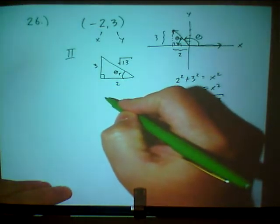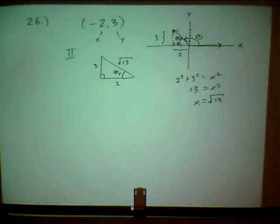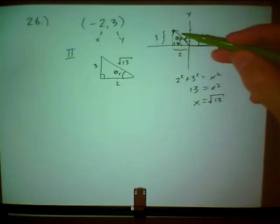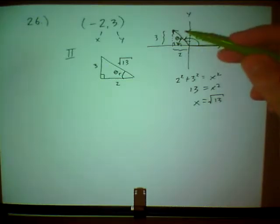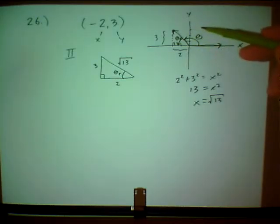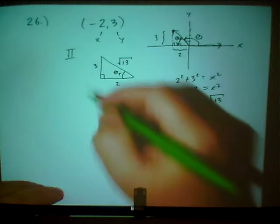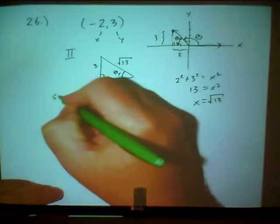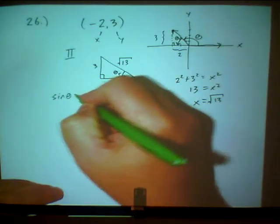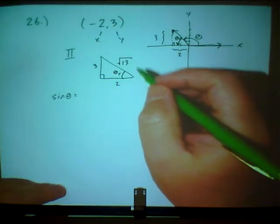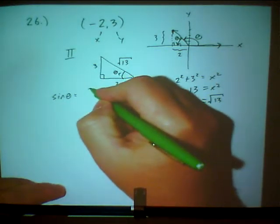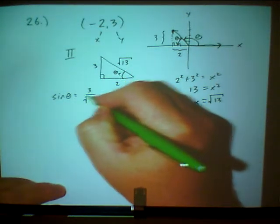So now, the only thing I have to be careful about, since my actual initial angle is in the second quadrant, I have to attach the right signs. So if I do the sine of theta, sine is opposite over hypotenuse, 3 over square root of 13.